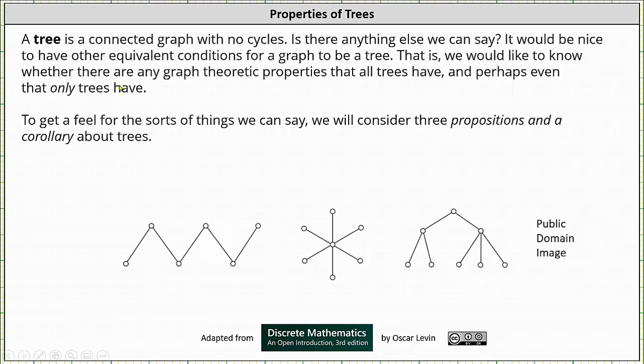So now that we know a tree is a connected graph with no cycles, is there anything else that we can say? It would be nice to have other equivalent conditions for a graph to be a tree. That is, we would like to know whether there are any graph theoretic properties that all trees have and perhaps even that only trees have.